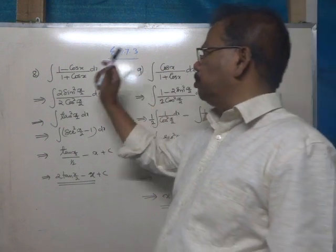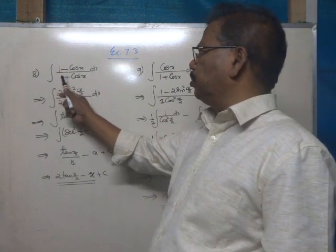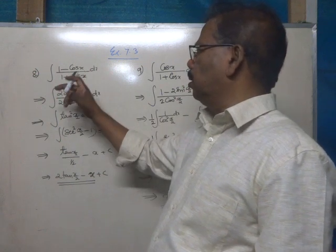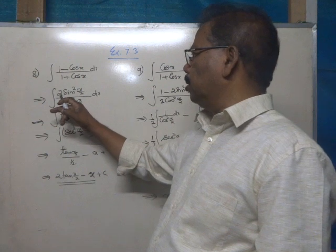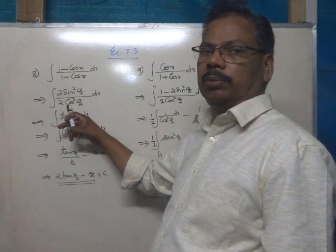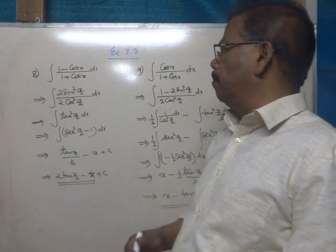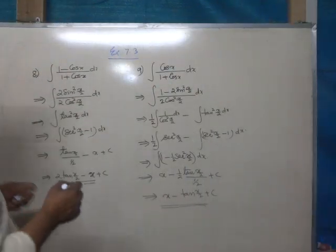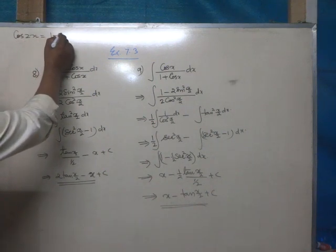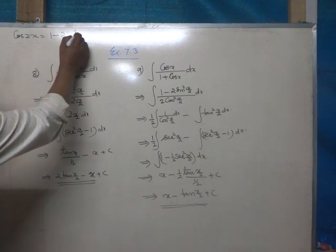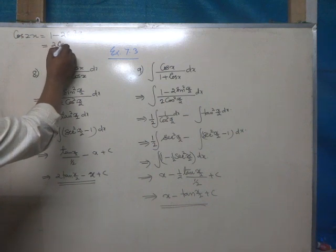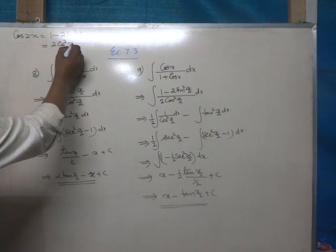Exercise 7.3, question number 8: integrate (1 - cos x)/(1 + cos x). The expression 1 - cos x can be expressed as 2sin²(x/2) and 1 + cos x as 2cos²(x/2), using the identity cos 2x = 1 - 2sin²x or 2cos²x - 1.